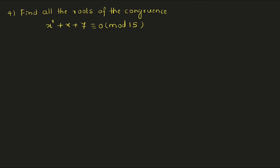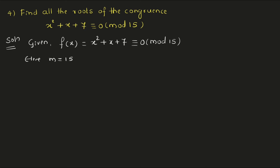Now we will check one more example. Find all the roots of the congruence x² + x + 7 ≡ 0 (mod 15). Now m is 15 here, and 15 is a larger value. You can split it as 5 × 3. Consider the bigger value, which is 5. We will check it for 5 only. For mod 5, the set of values goes from 0 up to 4: that is 0, 1, 2, 3, 4. For mod 3, it is 0, 1, 2, which comes within this set of 5.